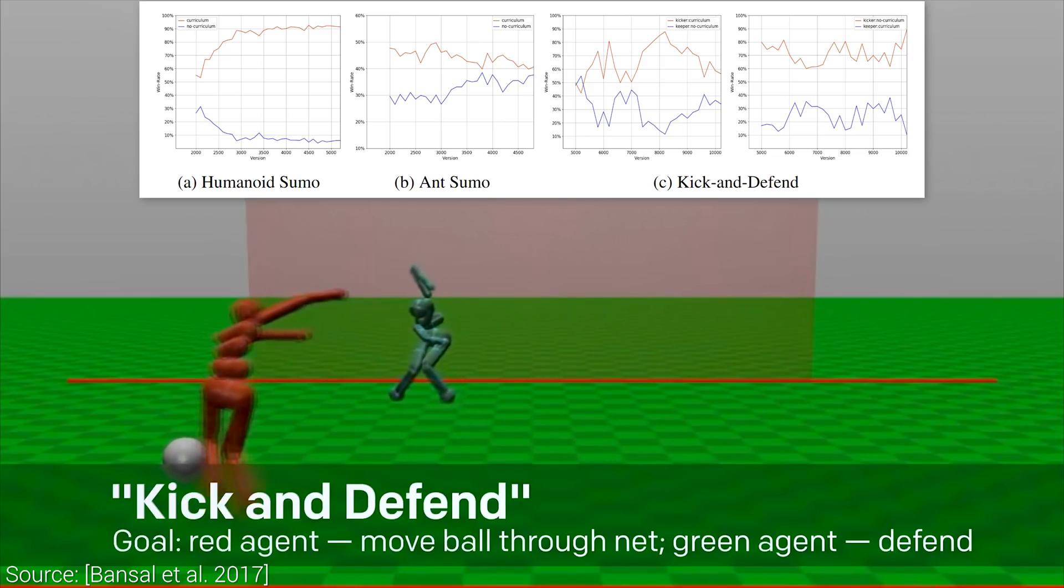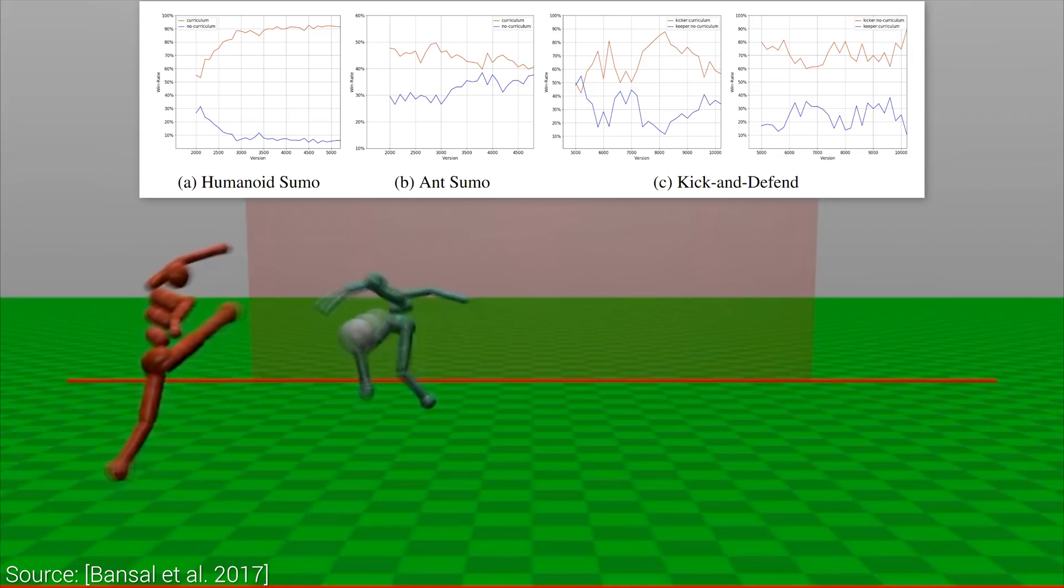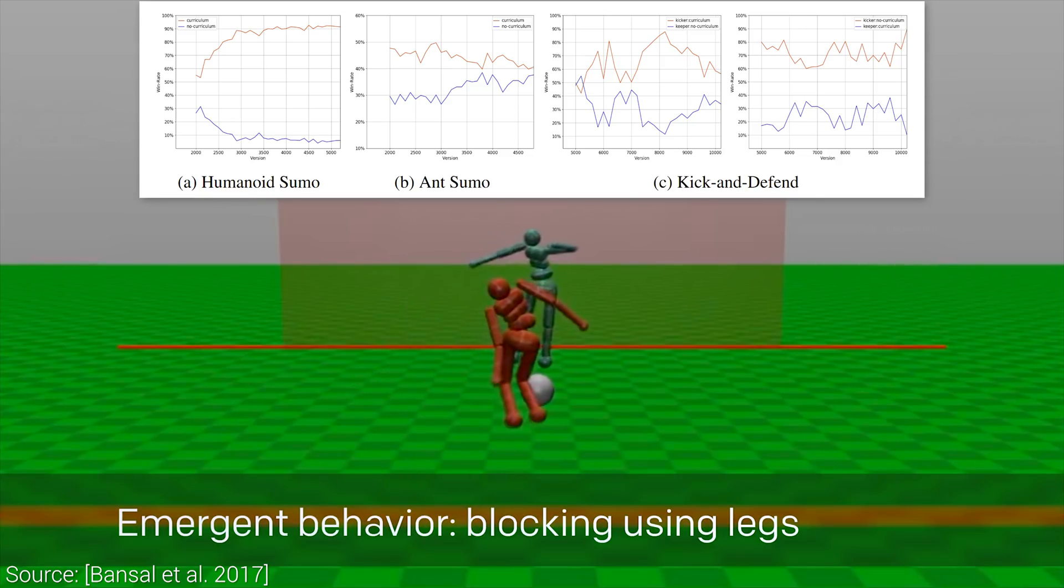And you also see that whenever a plot is symmetric, that means that they are zero-sum games, so if one agent wins a given number of points, the other loses the same amount.